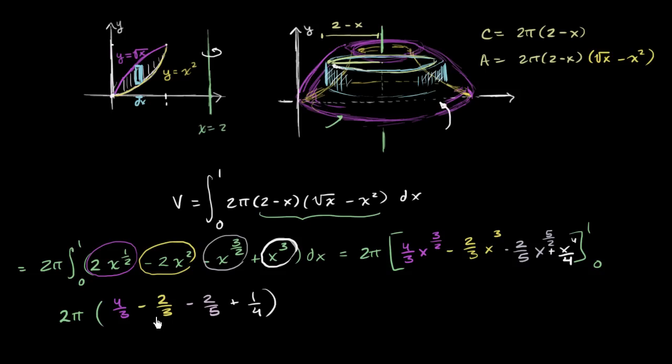And the least common multiple right over here looks like 60. So we're going to want to put all of this over a denominator of 60.